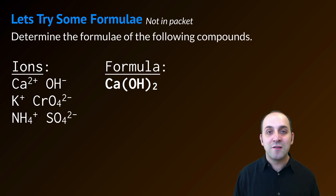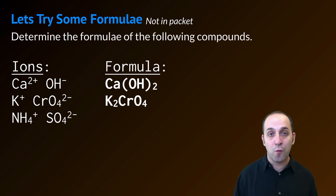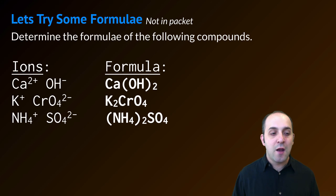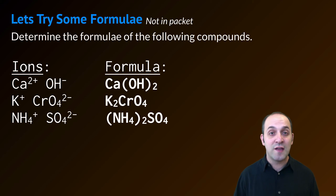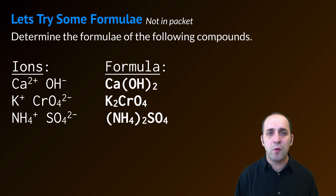For potassium chromate, the formula is going to be K2CrO4. Notice I didn't use parentheses here since I'm only using one chromate ion. And ammonium sulfate is going to have the formula (NH4)2SO4 — NH4 in parentheses because I need two of them. Does this make sense? If it doesn't, take a moment and write down any questions that you have before we move on.